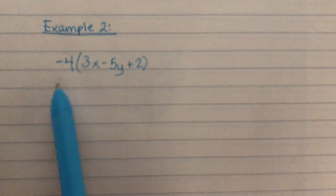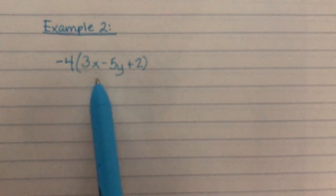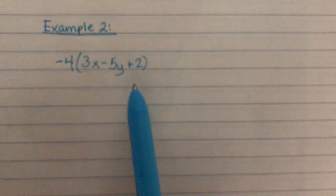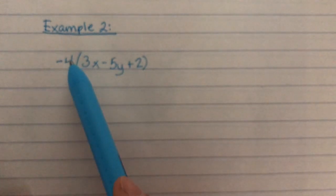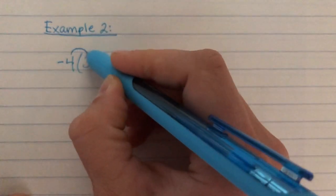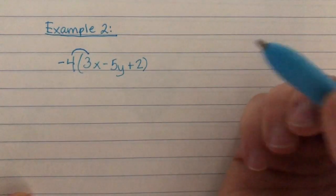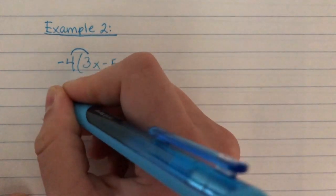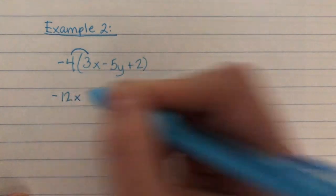Now, I could go ahead and write this out and have negative groups, and each group had 3x minus 5y plus 2, but that can get a little bit confusing. So, we can actually just use our shortcut for the distributive property of multiplying each part to get our final expression. So, if we do that, we're going to take a negative 4 times a 3. That would be negative 12, and then we need to bring down the x.